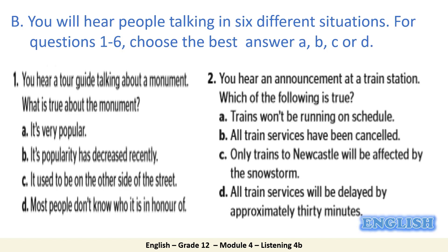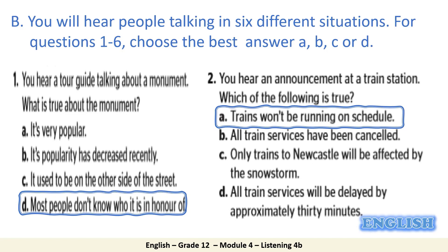Now let's check our answers together. Number one: you hear a tour guide talking about a monument — what is true about the monument? In the first audio, the tour guide mentioned a statue of the famous scientist Stuart Hamilton. What is true about this monument is that most people don't know who it is in honour of. The answer is D. Number two: you hear an announcement at a train station — which of the following is true? The announcement is about the impact of extreme weather conditions on the train's timetable. The answer is A: trains won't be running on schedule.